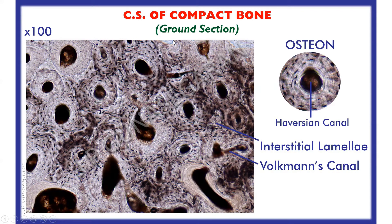This is a ground section of compact bone cut crosswise. Ground section means a small piece of dry compact bone is taken and rubbed against a rough surface to make it as thin as possible and examined under a microscope. It is an unstained section. During this dry processing, soft tissues are destroyed, leaving behind the complex communicating canals and canaliculi.